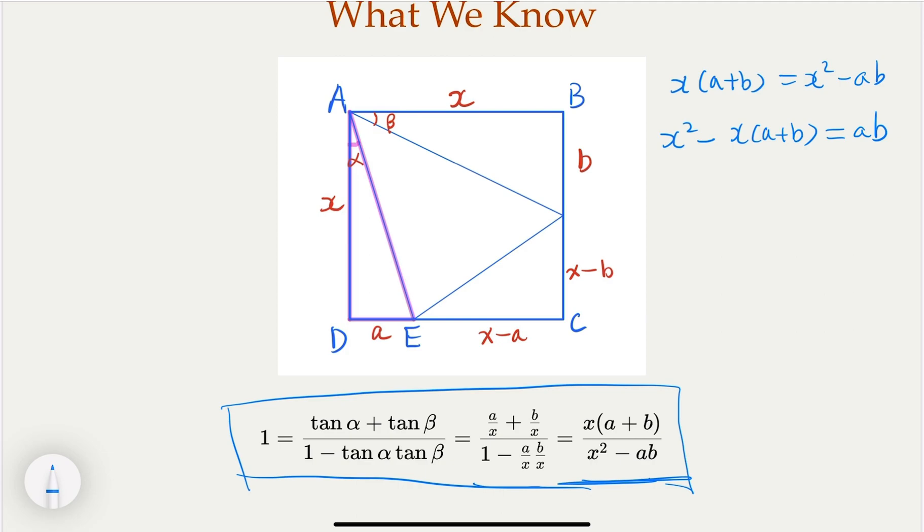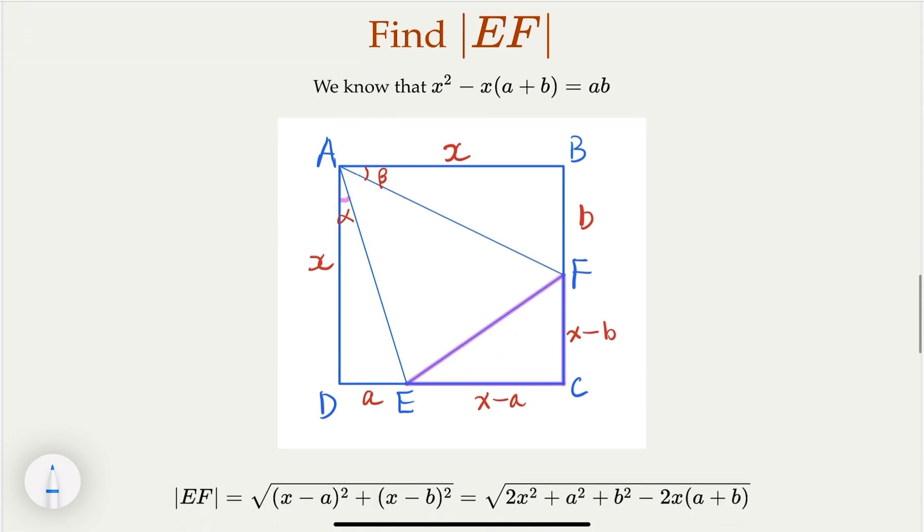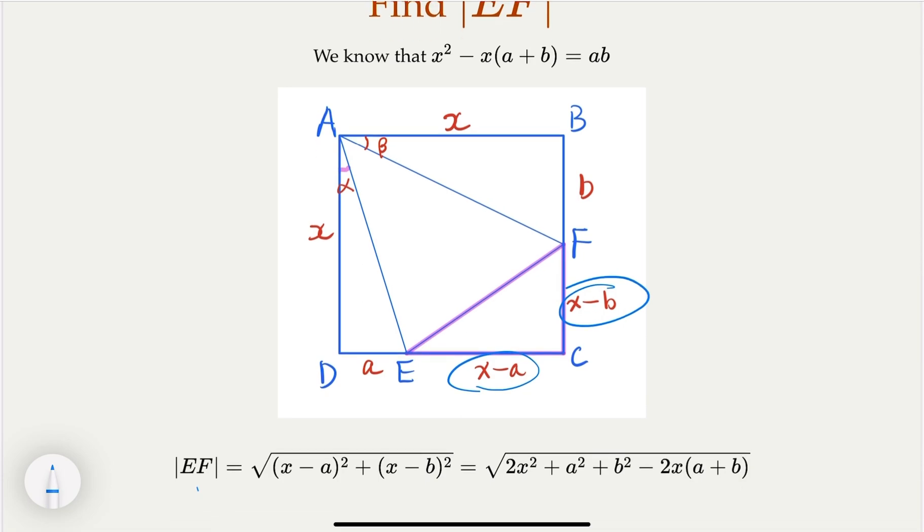Now, what we need to prove is EF, the length here, is equal to the sum of a and b. So what is EF? We're going to look at this. I highlighted the pink triangle here. We're going to use the Pythagorean theorem to solve that. So EF, by the Pythagorean theorem, is going to be the square root of, the side lengths here are x minus a and x minus b. And then if you expand it out, you're going to have this.